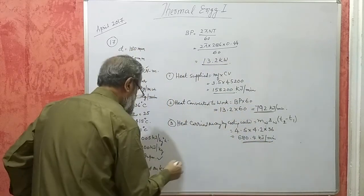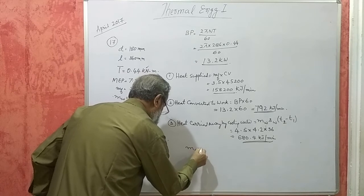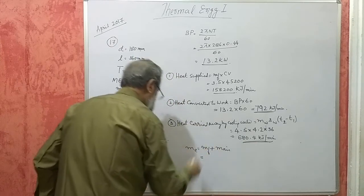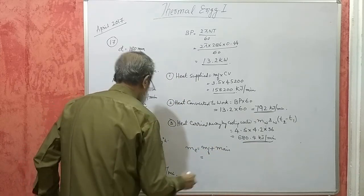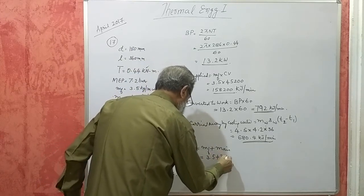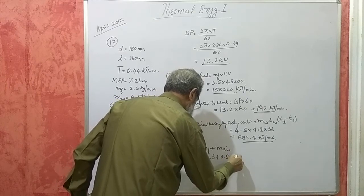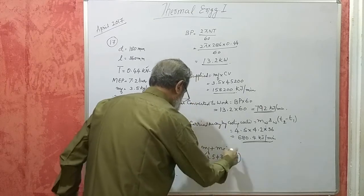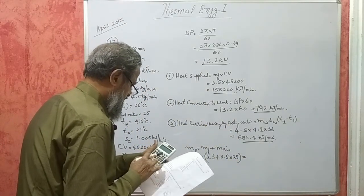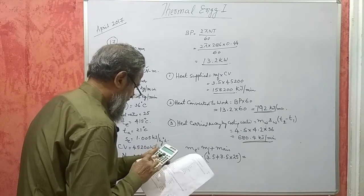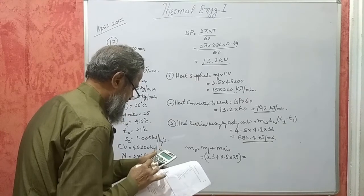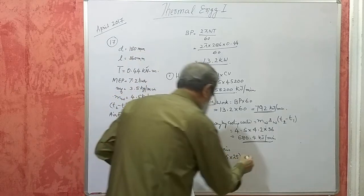Mass of exhaust ME is equal to MF plus M air. So MF is 3.5 plus 3.5 into 25, because air is 25 times this thing. 3.5 into 25 plus 3.5, that works out to 91 kgs per minute.